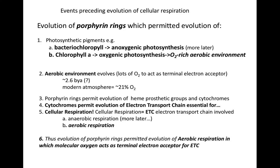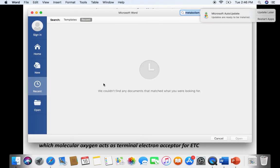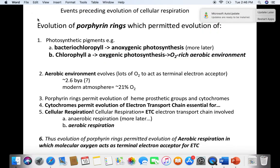As microbiologists, whenever we see the word 'respiration,' we think that an electron transport chain is involved. In microbiology, anaerobic respiration means there is an ETC, but the terminal electron acceptor is a molecule other than oxygen. In contrast, aerobic respiration means there is an ETC and the terminal electron acceptor is oxygen. To sum it all up: the evolution of porphyrin rings was so important because it permitted the evolution of aerobic respiration, in which molecular oxygen acts as the terminal electron acceptor for the electron transport chain.